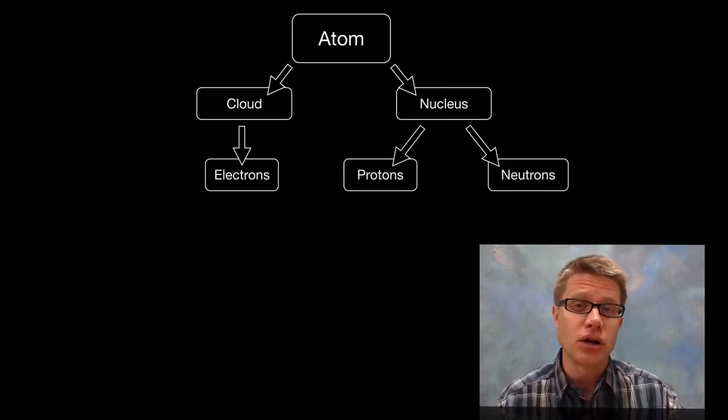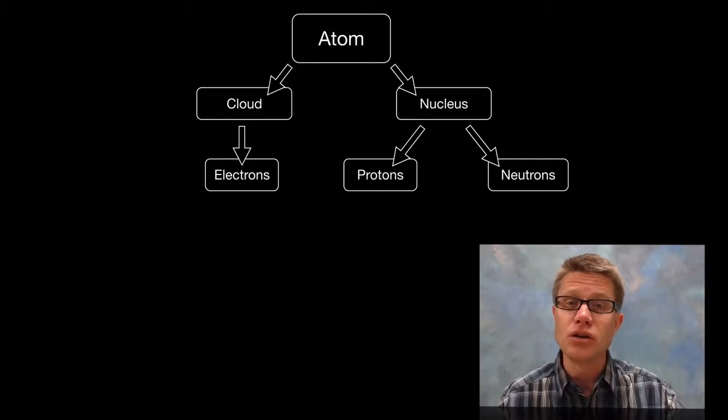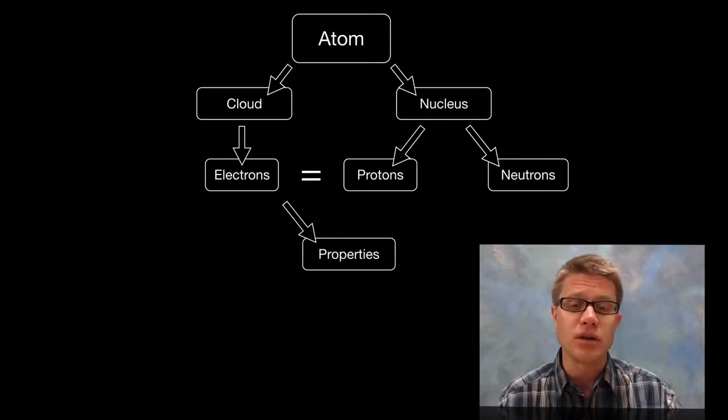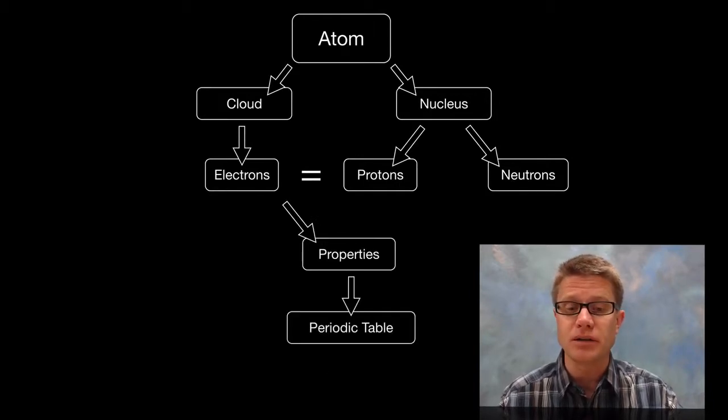And then protons and neutrons were found in the nucleus. And in a neutral atom the number of protons and electrons are going to be equal. And the electrons tell us a lot about the properties of that atom. In fact, the whole periodic table is built on the electrons.